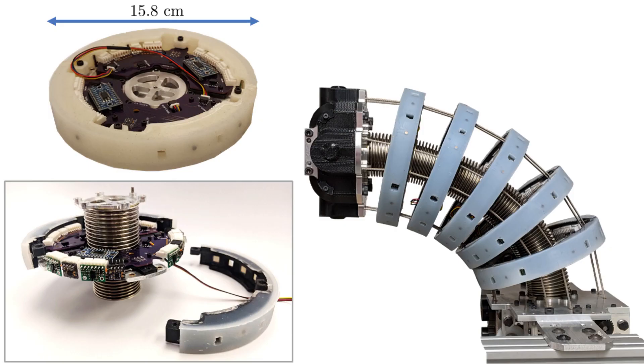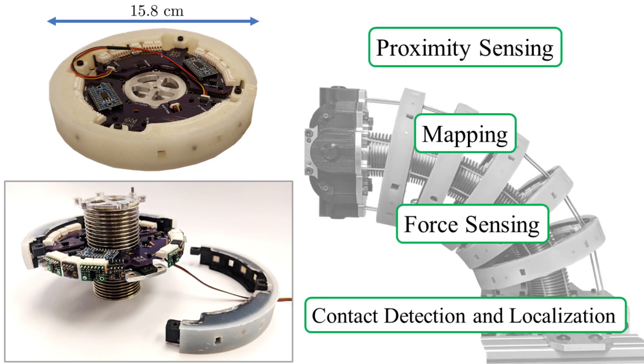This paper presents an array of sensing disk units that integrate into the body of a continuum robot and endow these with proximity sensing, mapping, force, and contact sensing capabilities.